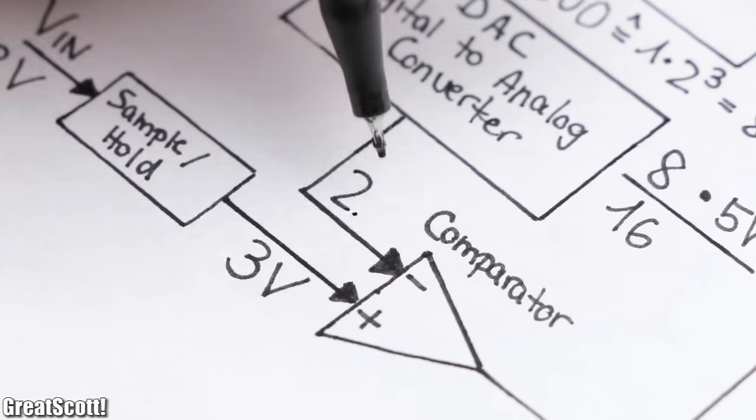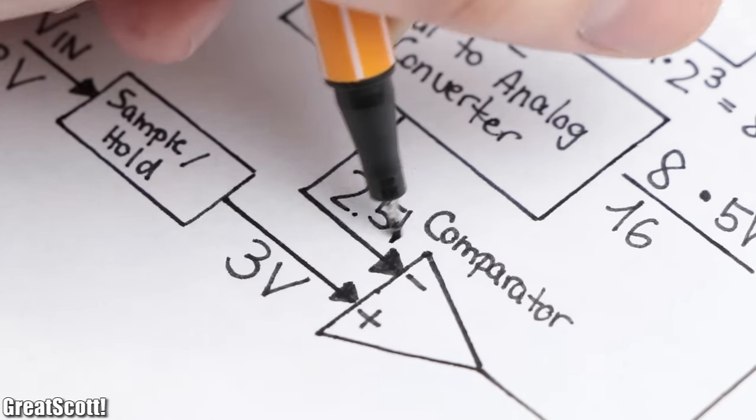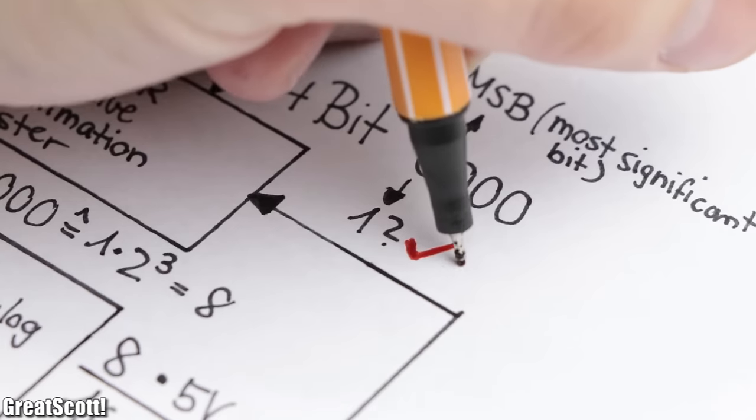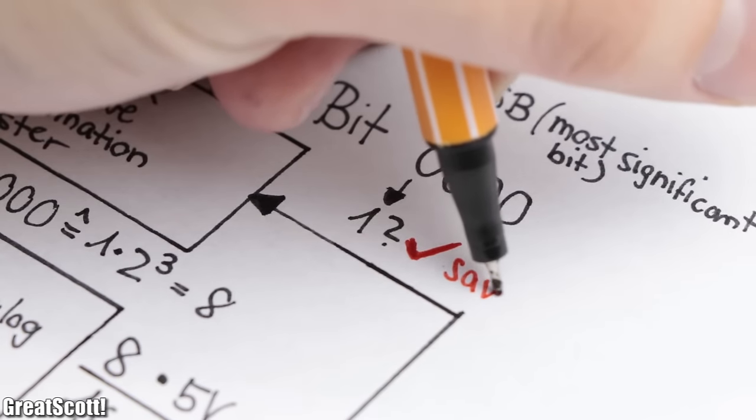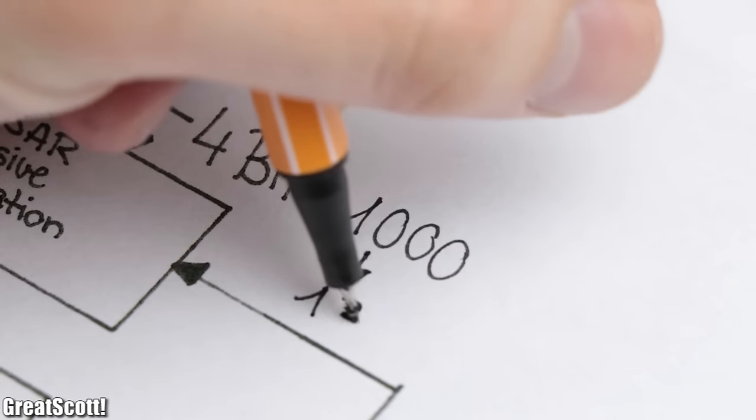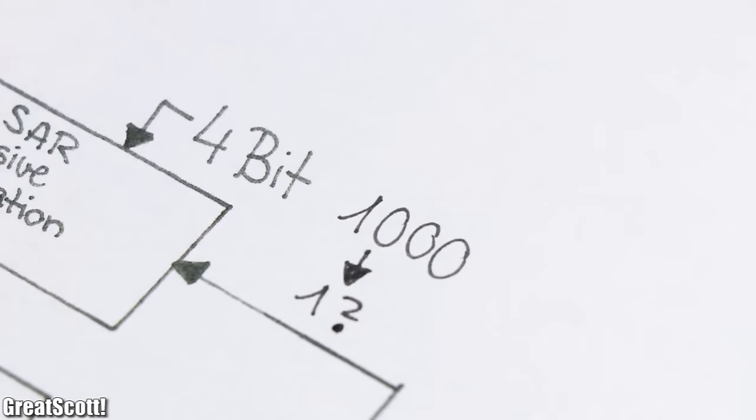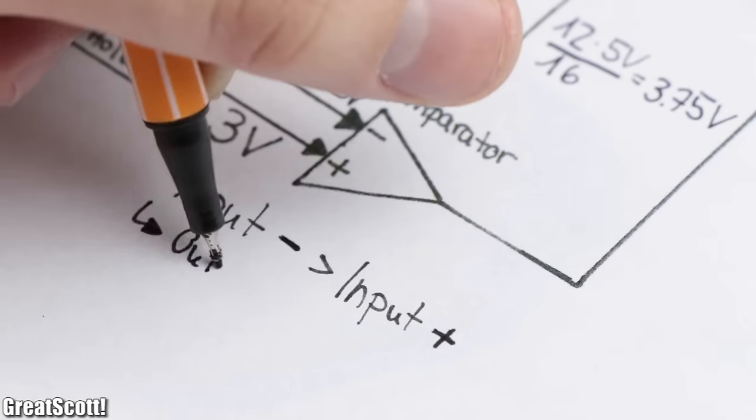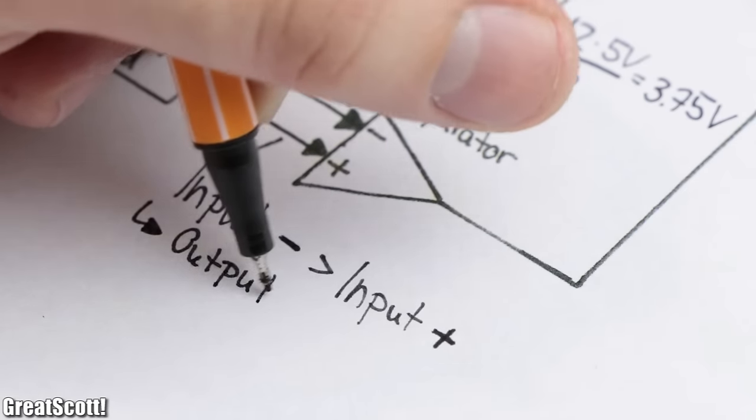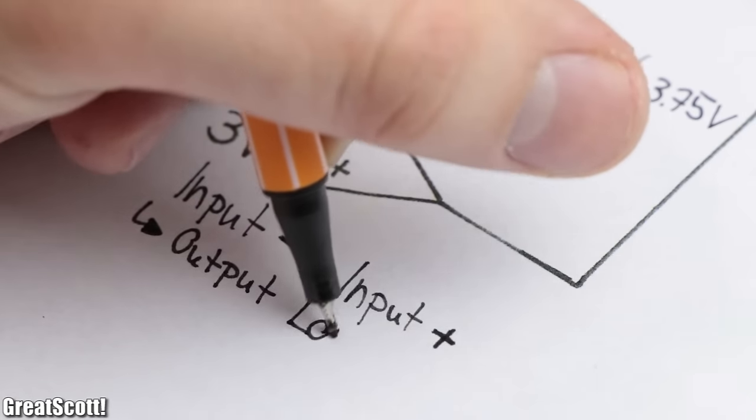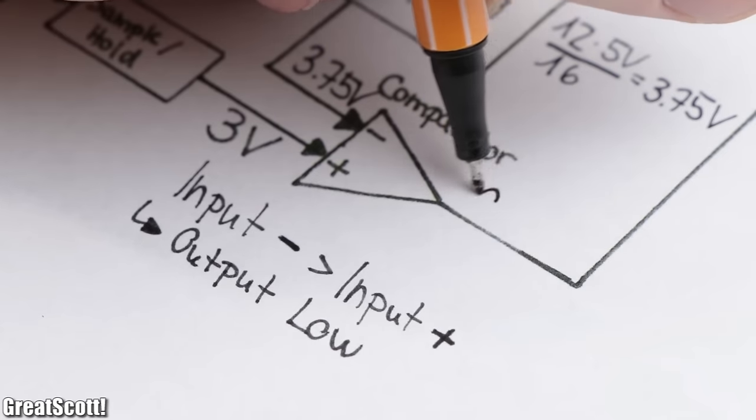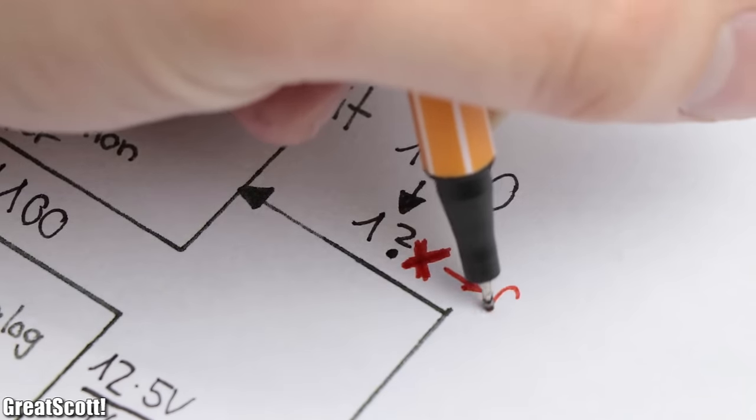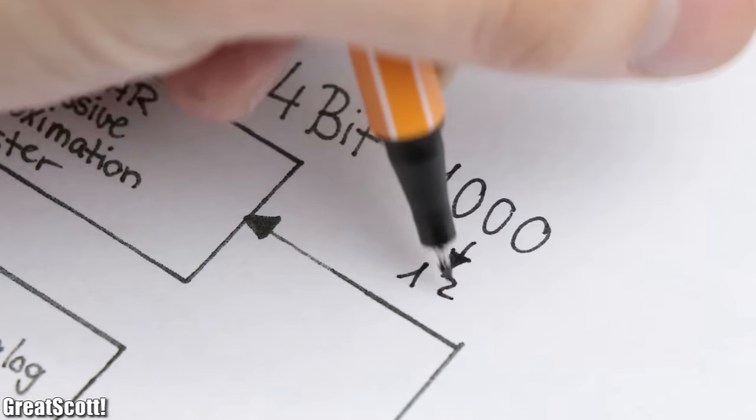As we all know, 3 volts is bigger than 2.5 volts, and thus the output of the comparator becomes high and the SAR saves the 1 as the MSB. Then the SAR changes the next bit to 1, sends it to the DAC, which once again creates a new voltage. This time though, the DAC's voltage is bigger than the sampled voltage, and thus the comparator sends a 0 to the SAR, which means it sets the previously changed bit to 0 and moves on to the next bit.